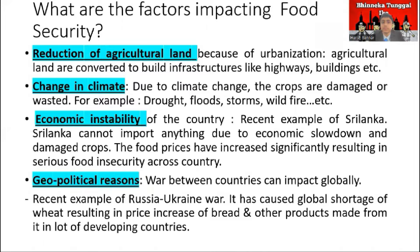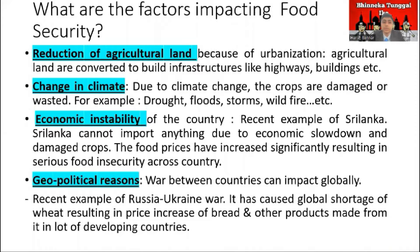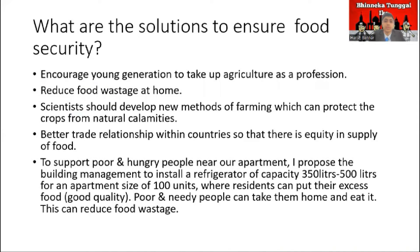In 2020, between 720 and 800 million people faced hunger, and healthy diets are out of reach for 3 billion people. Factors impacting food security include reduction of agricultural land, changing climate, economic instability, and geopolitical reasons. Solutions include encouraging the young generation to take up agriculture, reducing food wastage at home, developing new farming methods, and better trade relationships between countries. One proposed idea is for building management to install a refrigerator of 350 to 500 liters capacity per apartment block of 100 units where residents can put excess food for poor and needy people. Thank you.